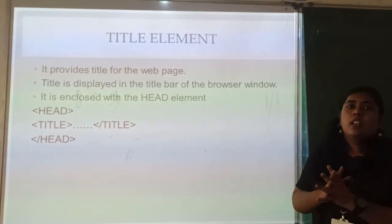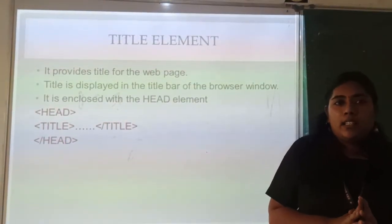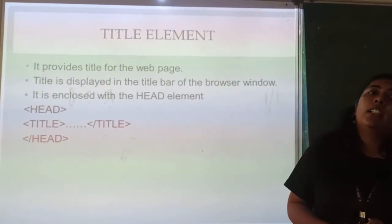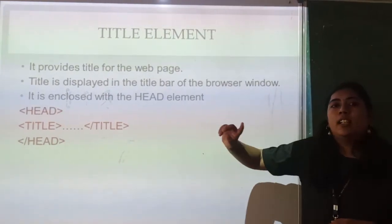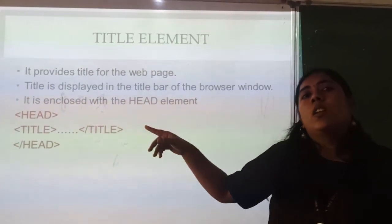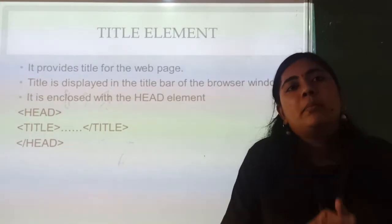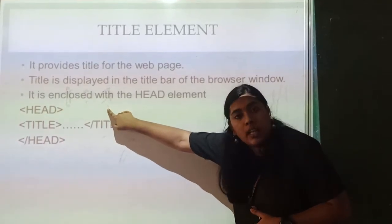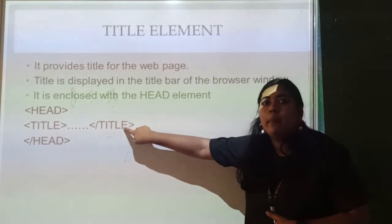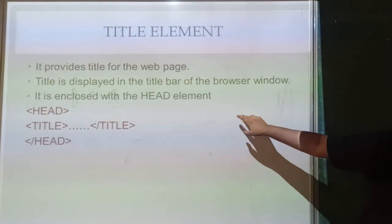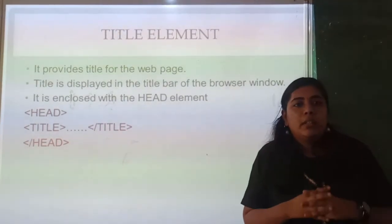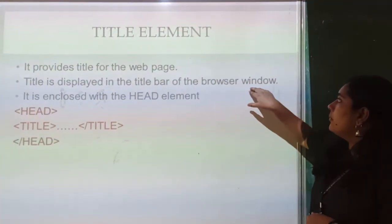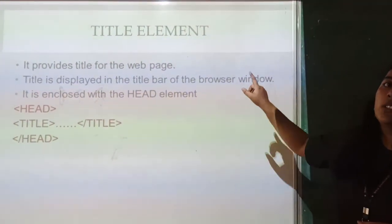Now we have the title element. Whenever we are preparing a document there will be a title. To create a title in an HTML document, we will use the tag title. This is a containing element, so both opening and ending tags will be there, and it must be enclosed within the head tag. It provides the title for the web page, and this title is displayed on the title bar of the browser window.